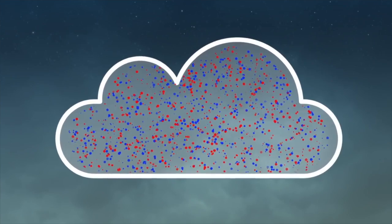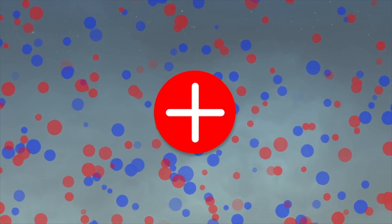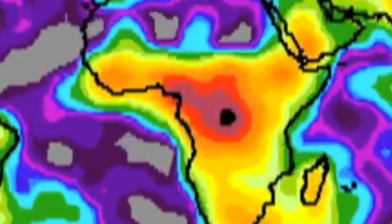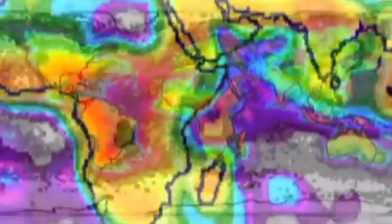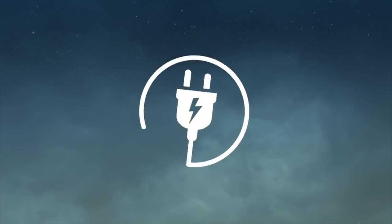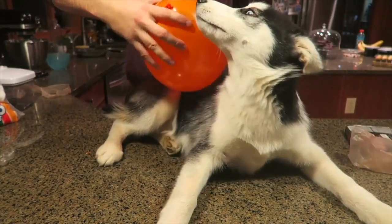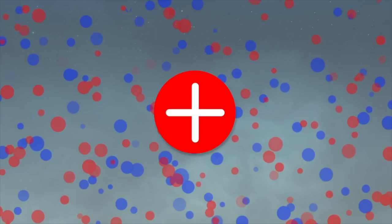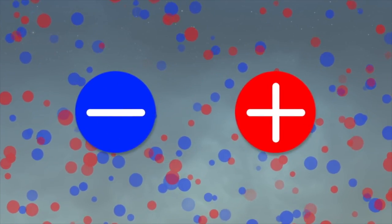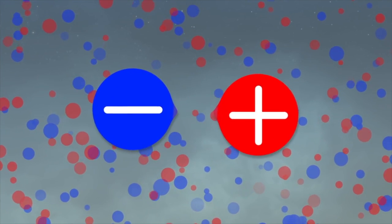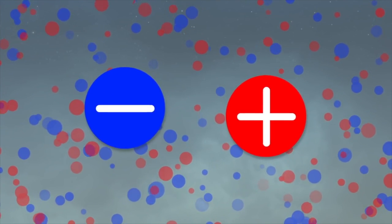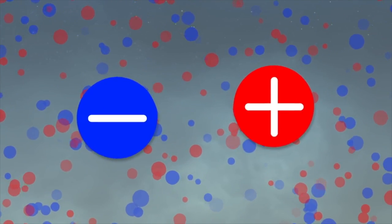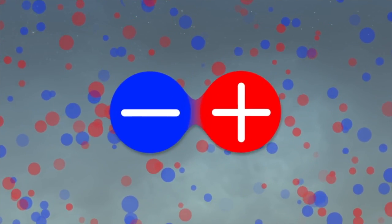Lightning starts as water and ice moving around in a cloud. It's being forced up by warm air currents, down by gravity, and compressed in the cloud. Just like rubbing a balloon can create static electricity, the particles in the cloud become charged. It's not actually clear how it happens, but the charges separate when in the cloud. Positive charges move up and negative charges move down.